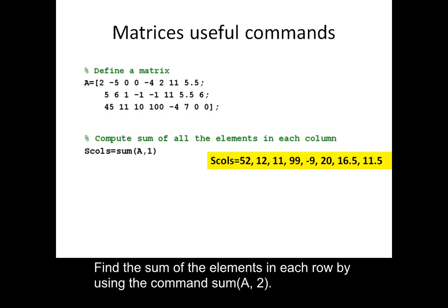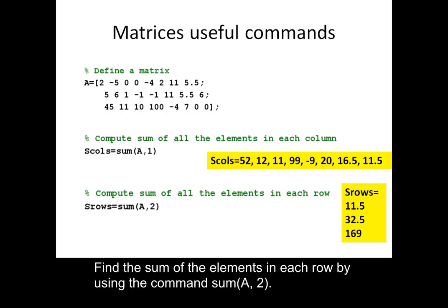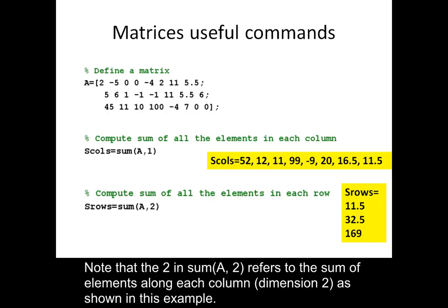Find the sum of the elements in each row by using the command sum(A,2). This computes the sum of the elements in row 1 as 11.5, row 2 as 32.5, and so on. Note that the 2 in sum(A,2) refers to the sum of elements along each column, dimension 2, as shown in this example.